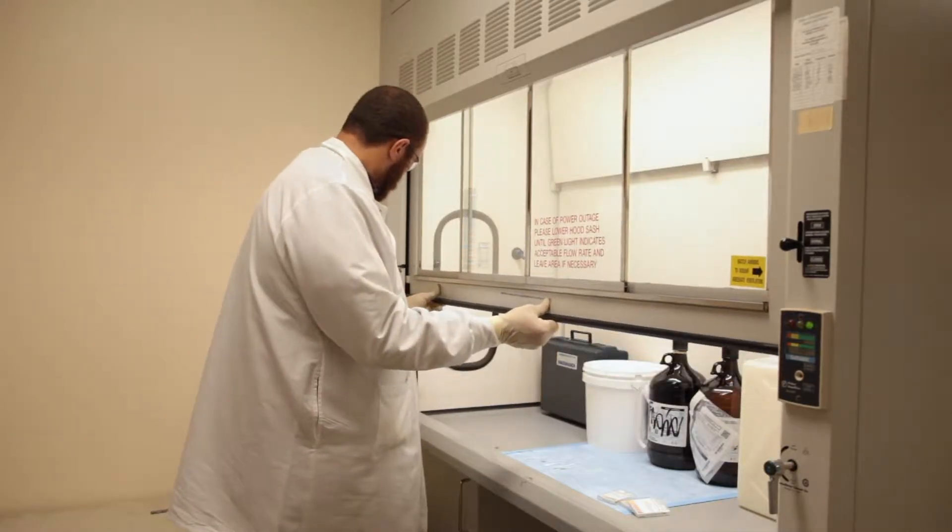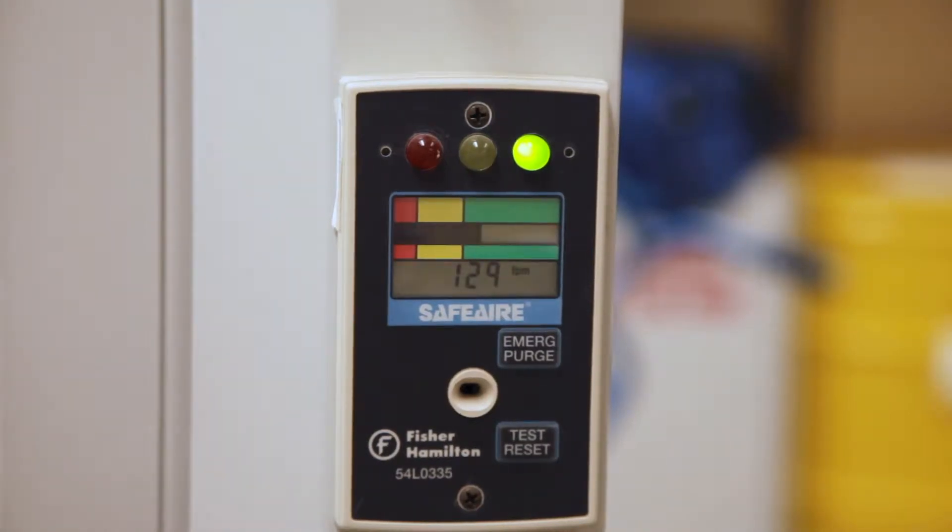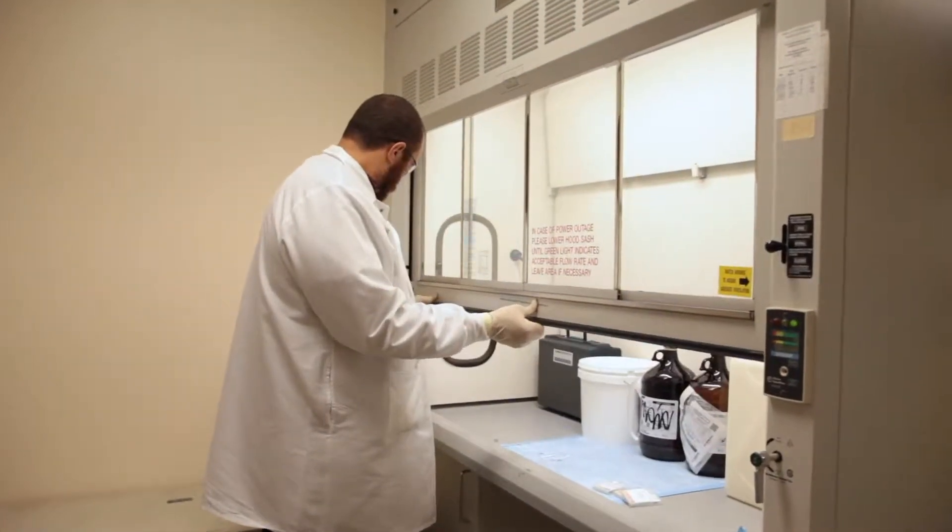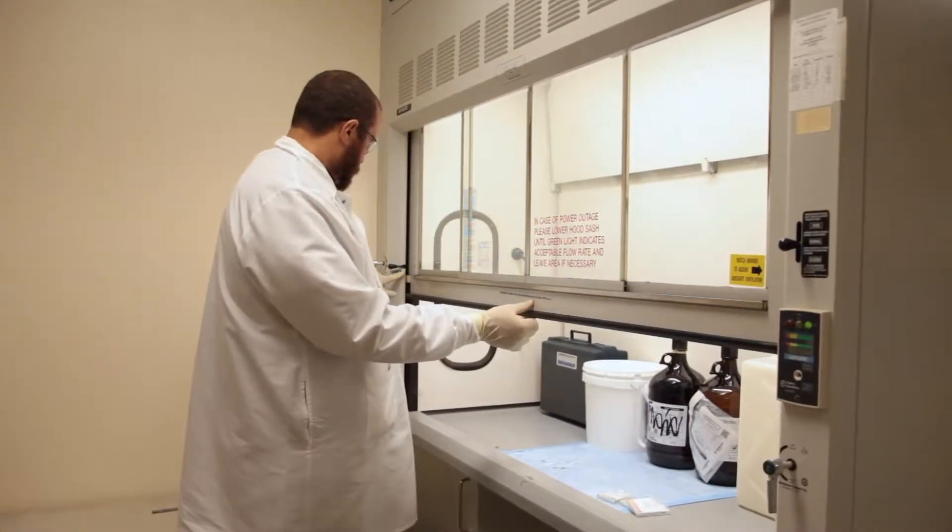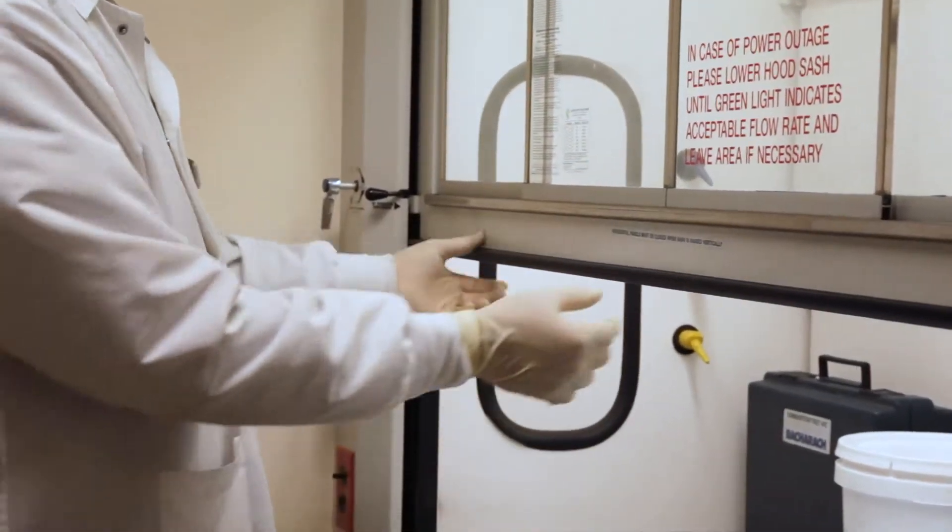Most fume hoods operate at a constant airflow. As a user opens or closes the sash with these types of hoods, the face velocity changes. The proper working height of the sash will be noted on the front of the hood. When using a fume hood, ensure the sash is not raised above this position to allow for proper airflow.